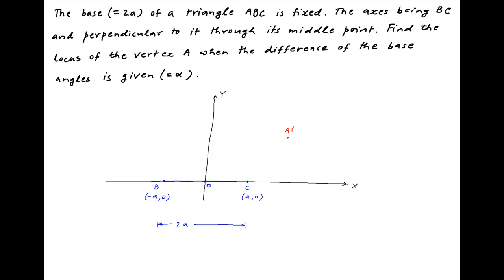Let's assume that the vertex A has coordinates (h, k). Now we join point B to point A and point C to point A to complete triangle ABC.